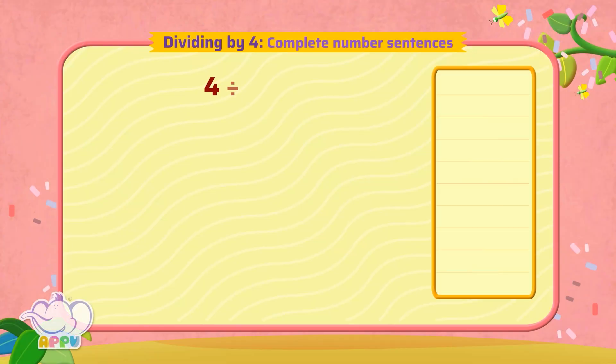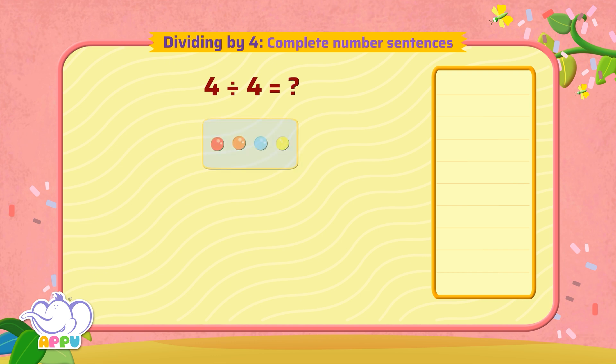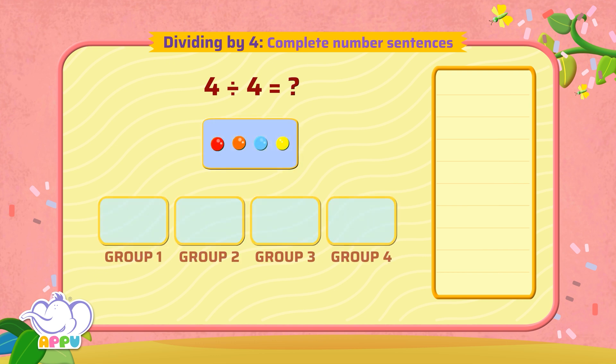What is 4 divided by 4? Since no objects are given, let's take beads. So when we divide 4 beads equally into 4 groups, we get 1 bead in each group. So the answer is 1.